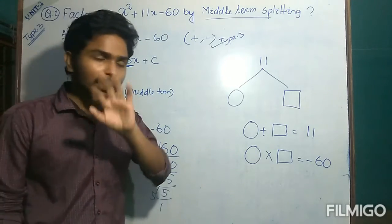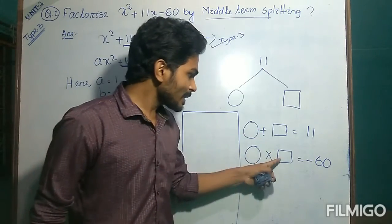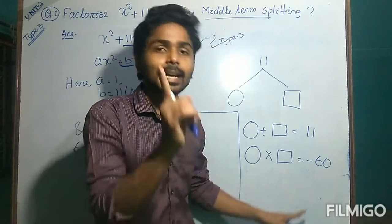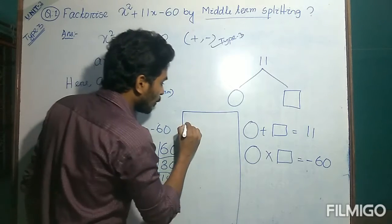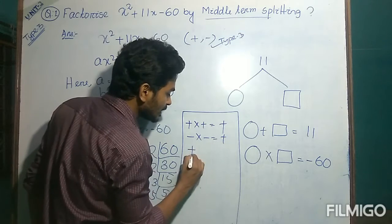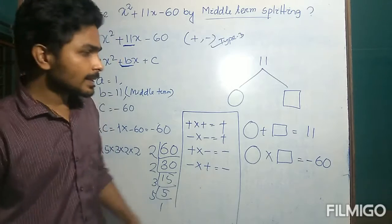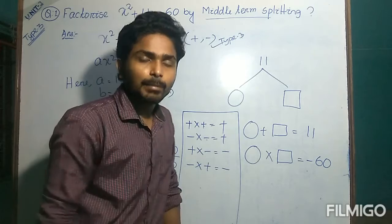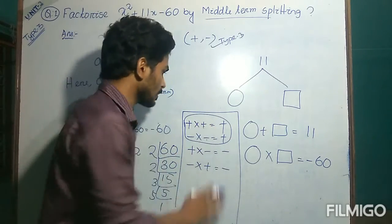In order to choose the pair, keep in mind one thing: in the multiplication case, whenever these two numbers are multiplied, they must give a negative sign. As we know, plus multiplied with plus gives plus, negative multiplied with negative gives plus, plus multiplied with negative gives minus, minus multiplied with plus gives minus. Since we need a negative sign after multiplication, the first two cases are removed out as they are impossible.